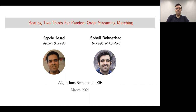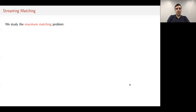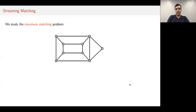I'm very excited to be giving a talk here. I'll be talking about our work with Savera Sadi on the random order streaming matching problem. A quick reminder: a matching of a graph is a collection of edges in the graph, no two of which share an endpoint, and a maximum matching is a matching of maximum possible size.